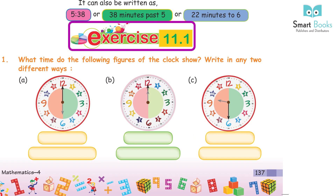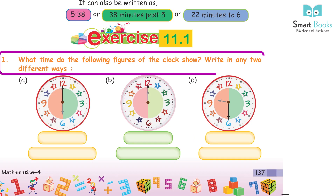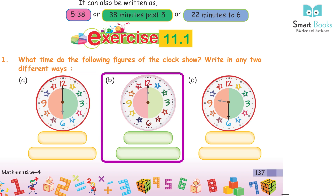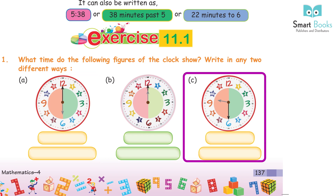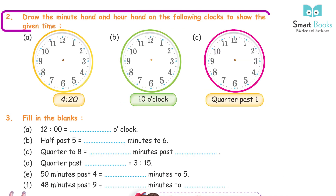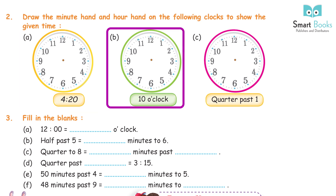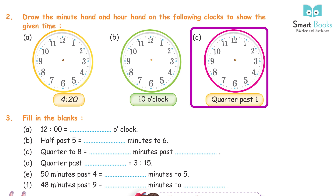Exercise 11.1, Question 1: What time do the following figures of the clock show? Write in any two different ways. A: 6 o'clock. B: 12 o'clock. C: 10:30 / half past 10. Question 2: Draw the minute hand and hour hand on the following clocks to show the given time. A: 4:20. B: 10 o'clock. C: Quarter past 1.